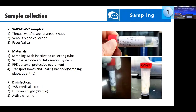For materials needed in sample collection, we need sampling swabs with inactivated collection tubes containing buffer. I recommend buffer with guanidine salt, which can inactivate the virus. We also need sample barcodes and an information system, PPE (personal protective equipment) to protect our technicians, and transport boxes with sealing barcodes for sample quality. After work, we need disinfection using 40–75% medical alcohol, ultraviolet light for at least 30 minutes, or active chlorine.